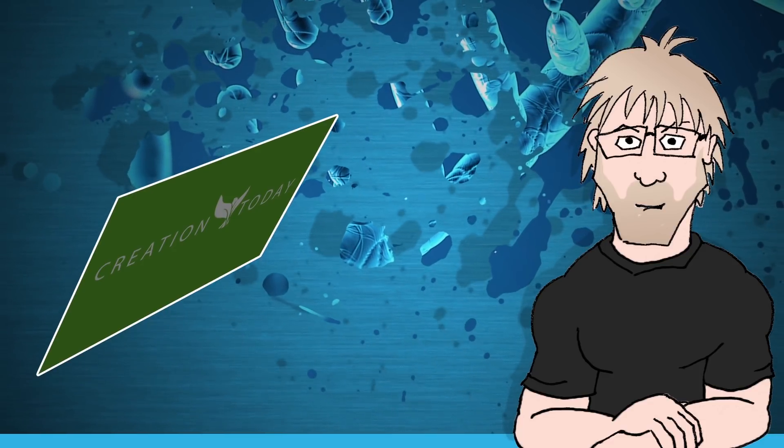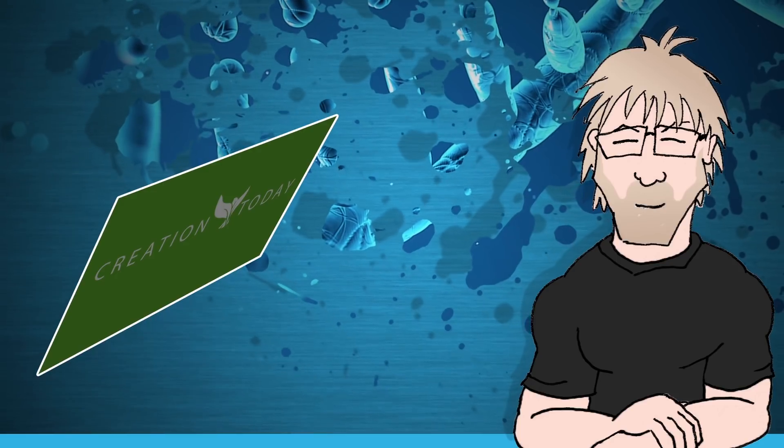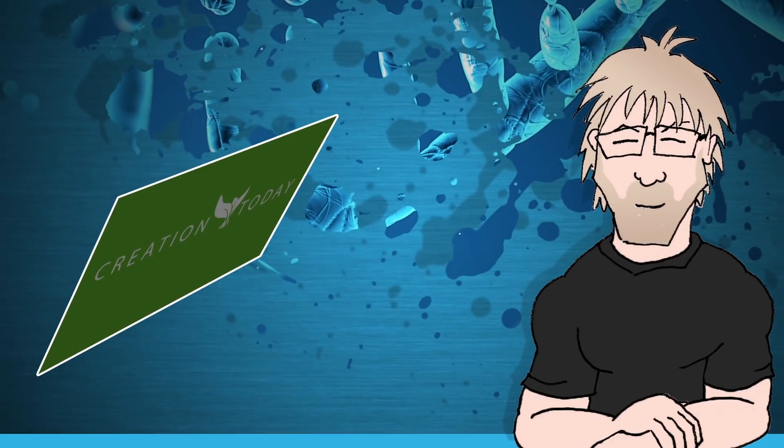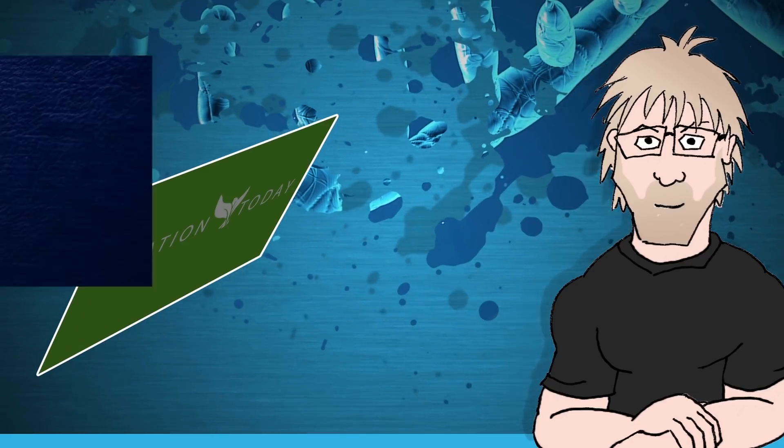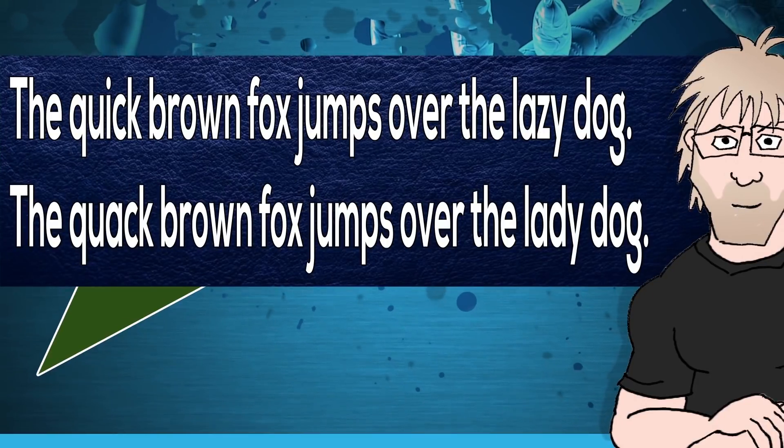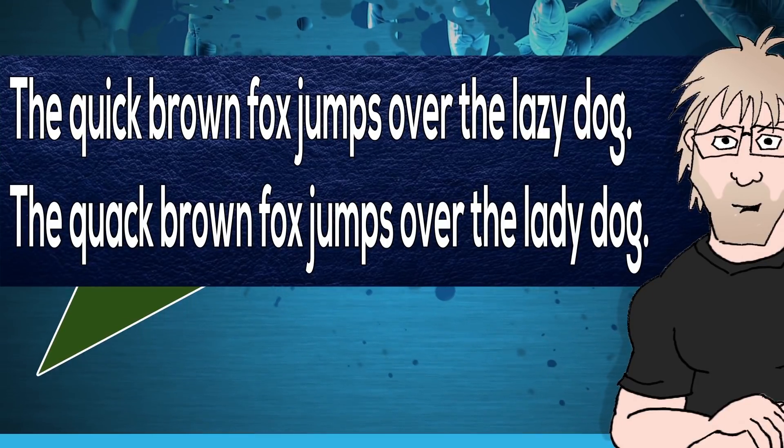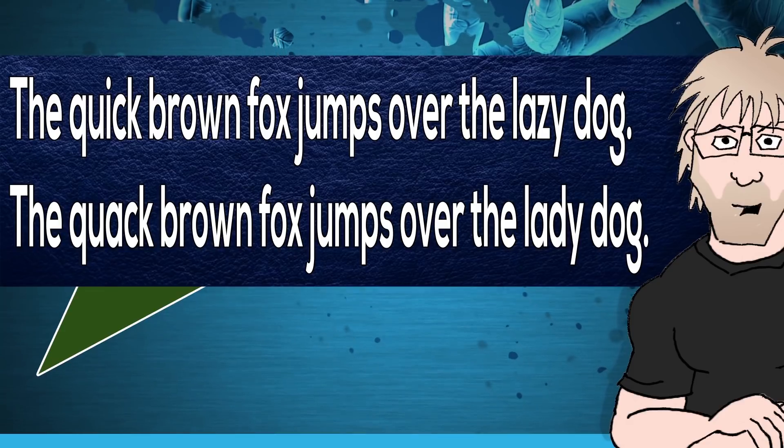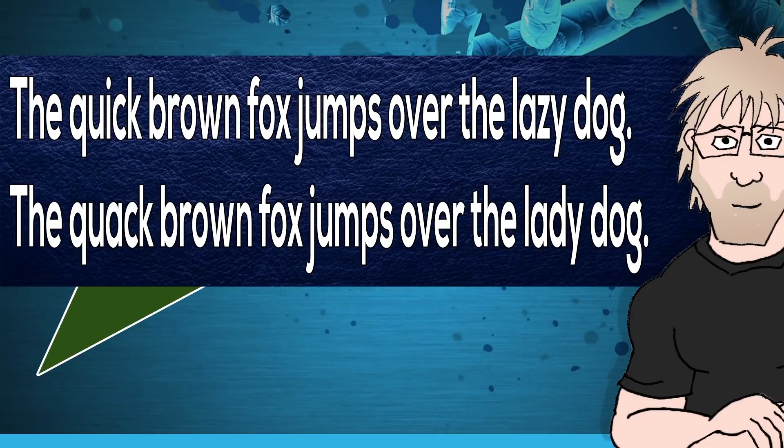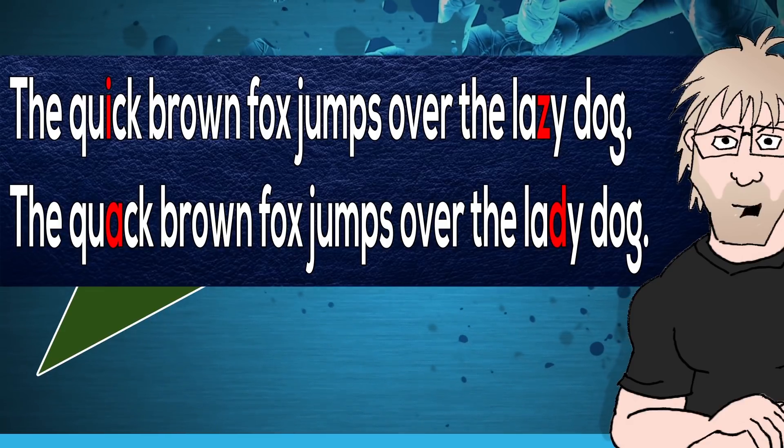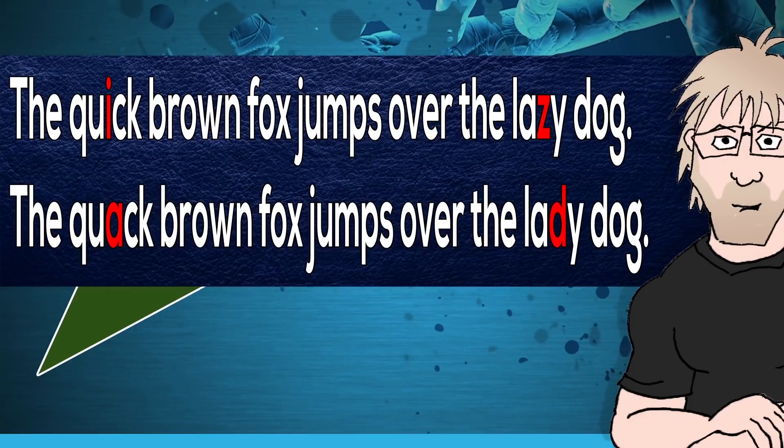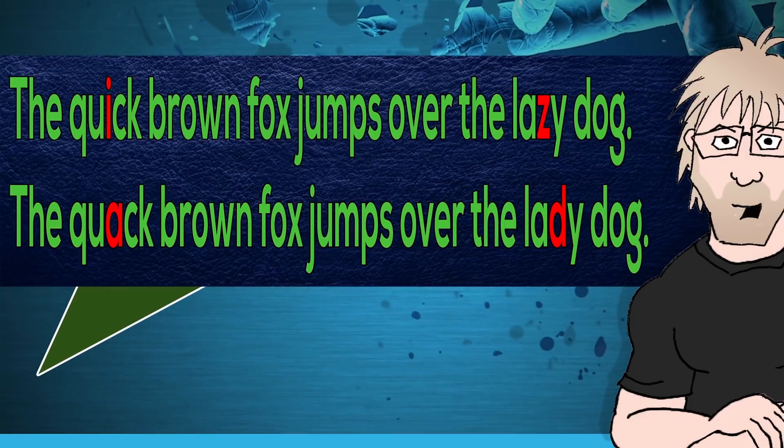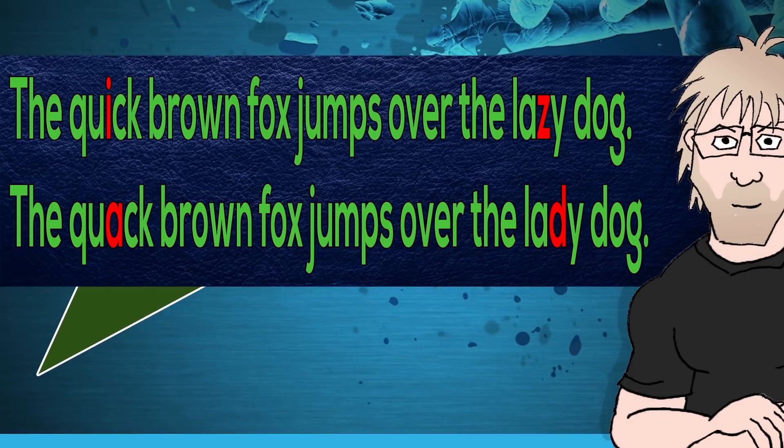It's interesting that Georgia asserts that only one type of difference was taken into consideration. You may recall the Chimpanzee Consortium catalogued three different types of changes. First, single nucleotide changes. Second, insertions deletions, called indels. And thirdly, chromosomal rearrangements. Consider these two sentences. The quick brown fox jumps over the lazy dog. The quack brown fox jumps over the lady dog. There are two letters different.